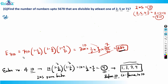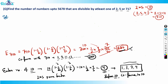Co-prime with 710 means numbers like 1, 3, 11, 13, and so on — numbers not divisible by 2, 5, or 71. If you list them all you get 280 such numbers. Now I need to find the nearest multiple of 710 to 5678, which is 710 × 8 = 5680.